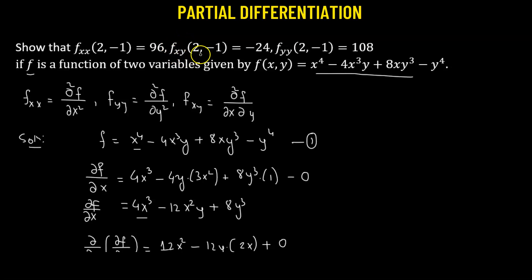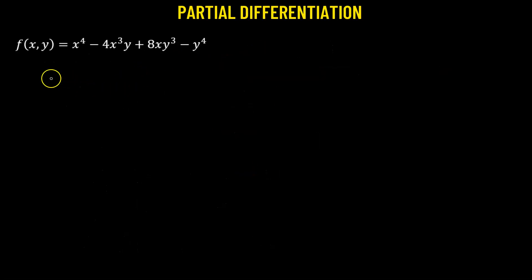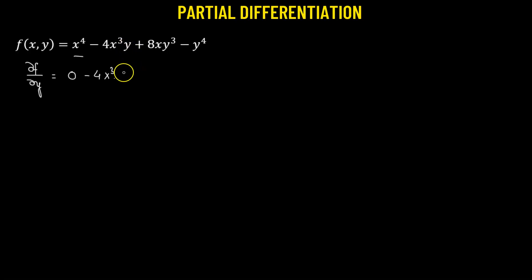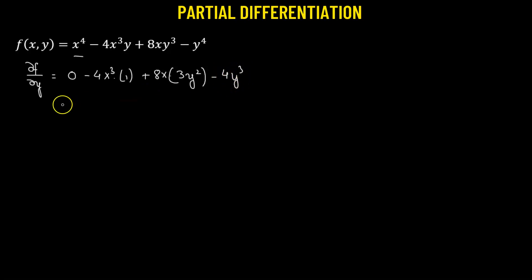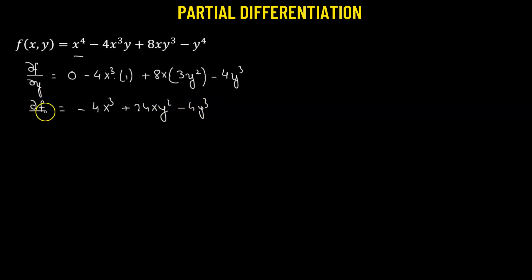Next, we calculate fxy at (2, -1) and show that this value is negative 24. We begin again with function f and calculate the partial of f with respect to y. The partial of x to the power 4 with respect to y is 0. Since we are taking the partial with respect to y, 4x cubed is treated as a constant, multiplied by the partial of y with respect to y, which is 1. Then 8x is a constant multiplied by the partial of y cubed, which is 3y squared. Minus the partial of y to the power 4, which is 4y cubed. This simplifies to negative 4x cubed plus 24xy squared minus 4y cubed, which is the partial of f with respect to y.